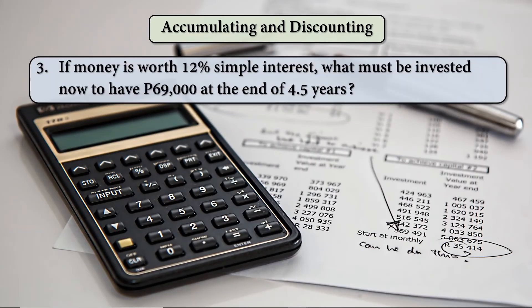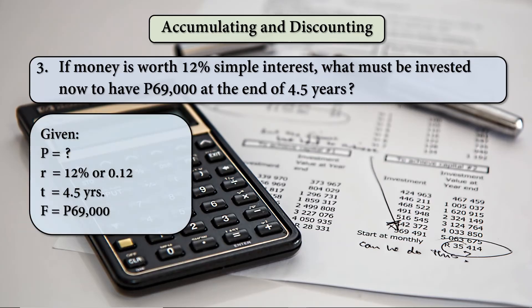For the third example: if money is worth 12% simple interest, what must be invested now to have 69,000 at the end of 4.5 years? The question is, how much should I invest now in order to have 69,000 after 4.5 years? So what we're looking for here is the present value or the principal value of the investment.